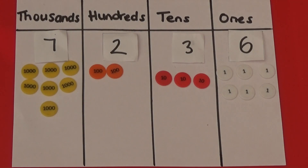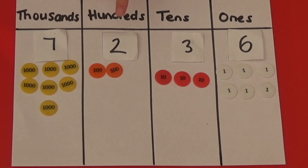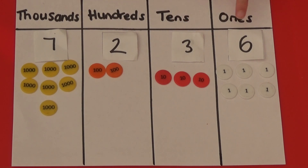I've used place value counters to make the number 7,236. I've used 7,000 for the thousands, 200 for the hundreds, 3 tens for the 30, and 6 ones for the 6.